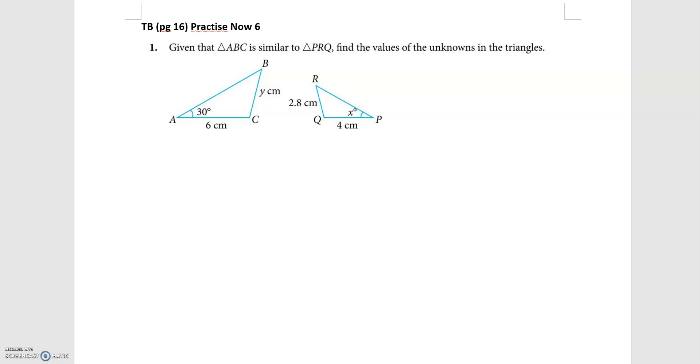This is Practice Now 6 from Chapter 8.2. Given that triangle ABC is similar to triangle PRQ, find the values of the unknowns in the triangles. Now there are a few unknowns here we need to find.